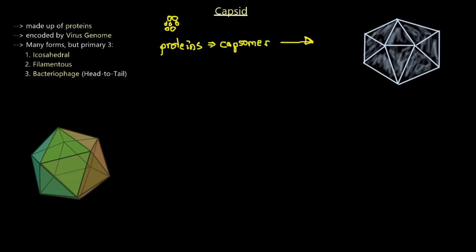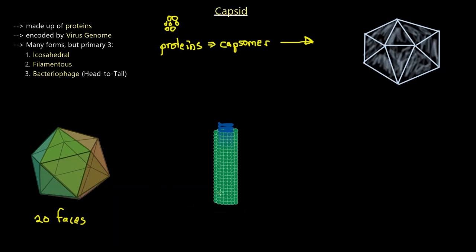The icosahedral structure is named because it has 20 faces — 20 different sides. That ball-like structure with 20 faces is the icosahedral form. Many proteins are encoded this way to form capsids in this manner.